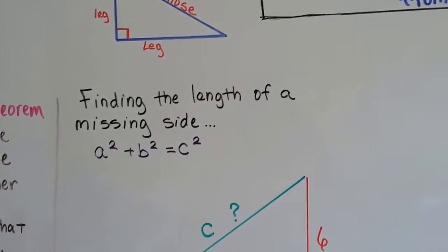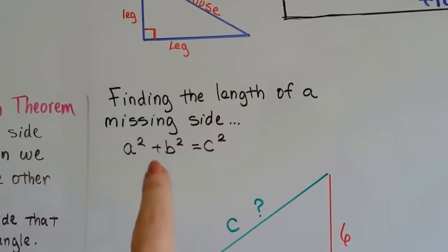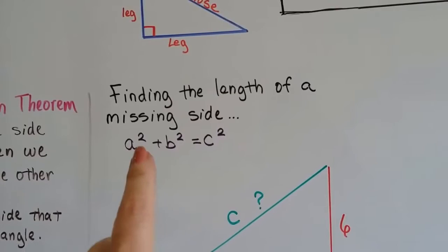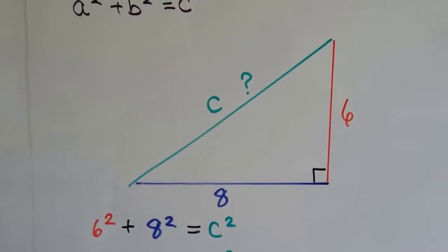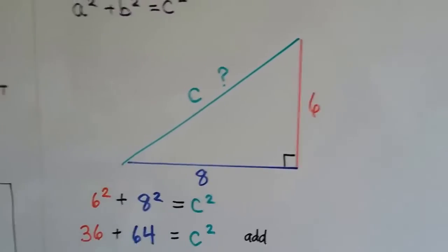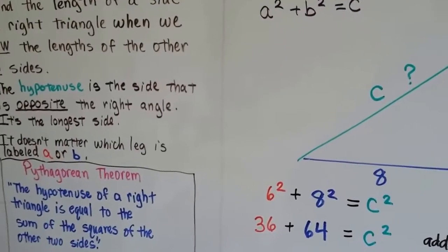If we need to find the length of a missing side, we remember the Pythagorean Theorem: a² + b² = c². Take a look at this triangle. It doesn't matter which we label a or b,